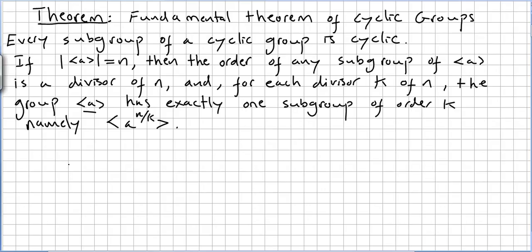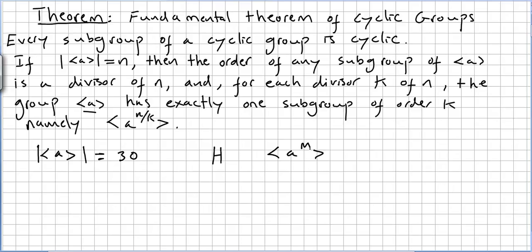This being true, what about a cyclic group of order 30? We know that every single subgroup of this group will be in the form A to the power of M, where M is going to divide 30.